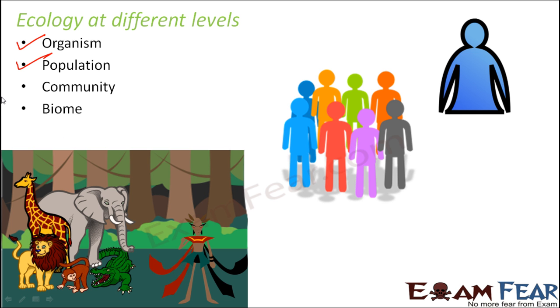Similarly, ecology can exist at a community level, which is a broader term than population. As you go ahead, it is a more broad term. Finally, it also exists at the level of a biome. Biome is a kind of habitat on a larger scale.